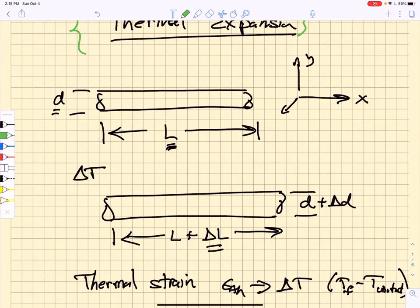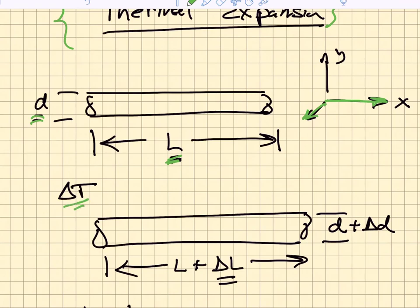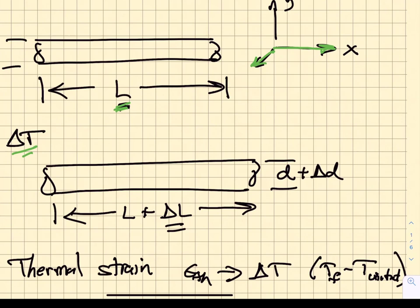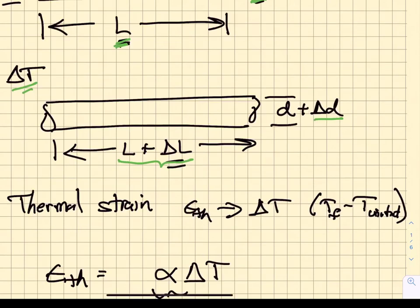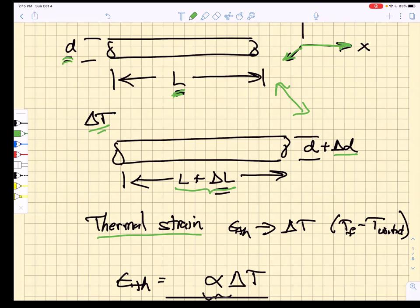Imagine we have a shaft of length L and diameter D aligned along the x-axis with the coordinate system shown right here. Now if we increase the temperature of that shaft we know that the shaft is going to expand. It's going to expand in the length direction by an amount delta L and in the diameter direction by an amount delta D. These differences in dimension compared to the initial dimensions represent a thermal strain and the magnitude of that thermal strain is going to depend upon the temperature difference between our initial state and our final state.